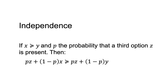A formal definition states that if x and y are lotteries with x preferred to y, and p is the probability that a third option z is present, then p times z plus 1 minus p times x is preferred to p times z plus 1 minus p times y. The third choice z does not change the preference ordering — the order of preference for x over y holds. It is independent of the presence of z.